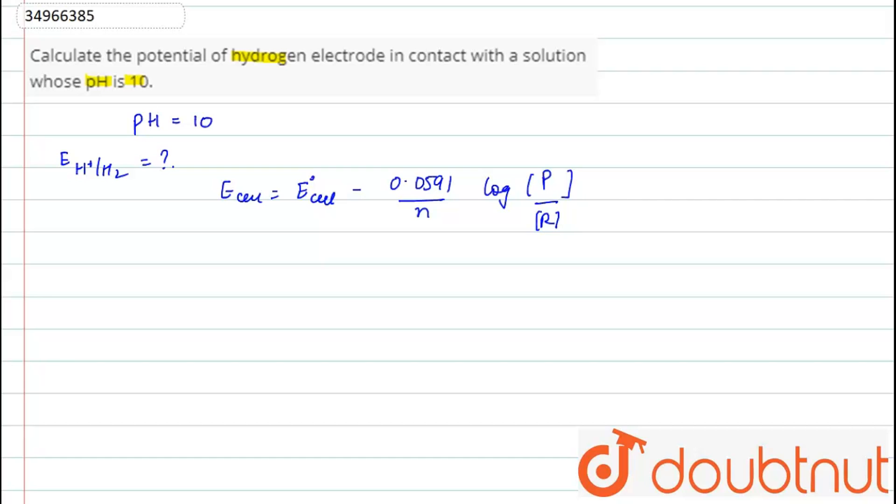Here, that electrode potential we will find out. First we will find out the concentration. As the pH is equal to 10,